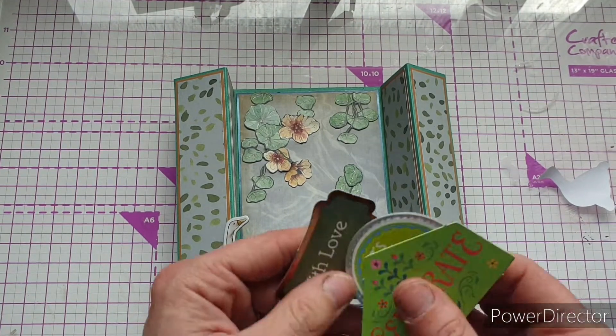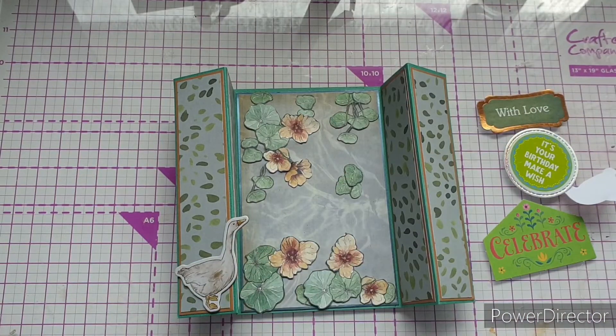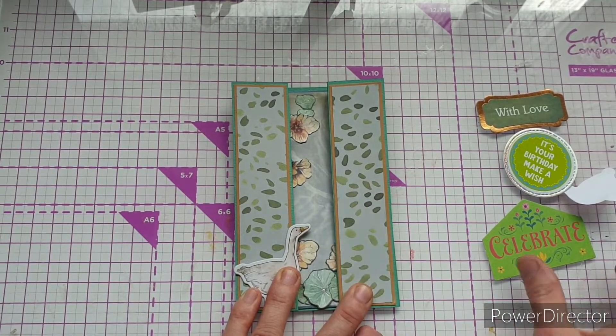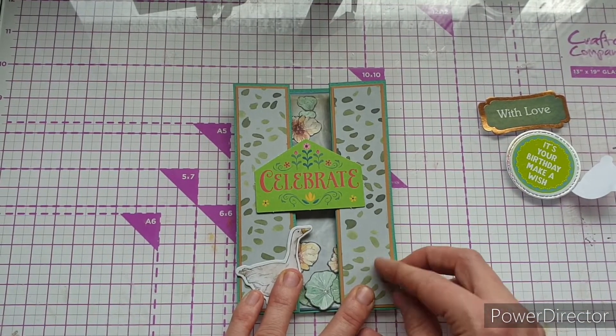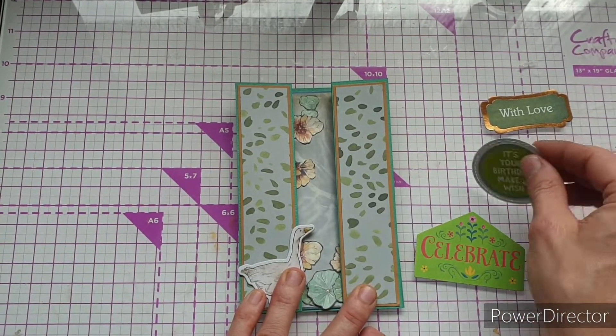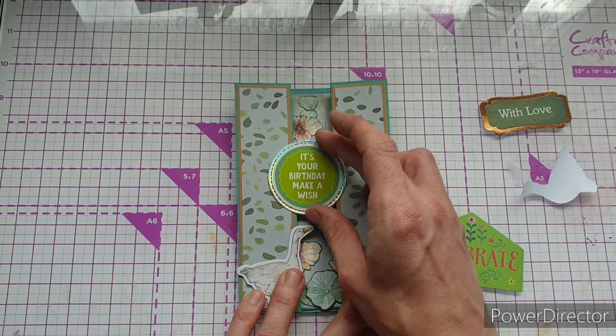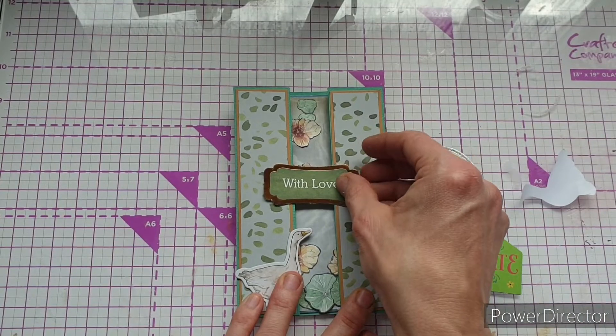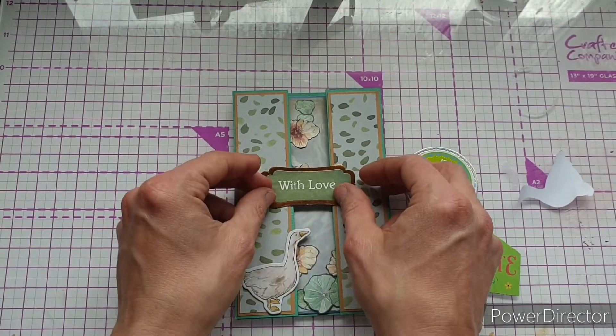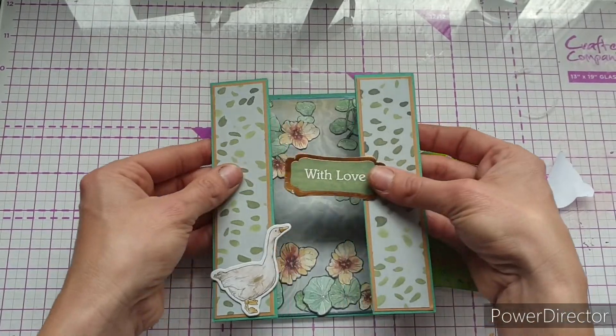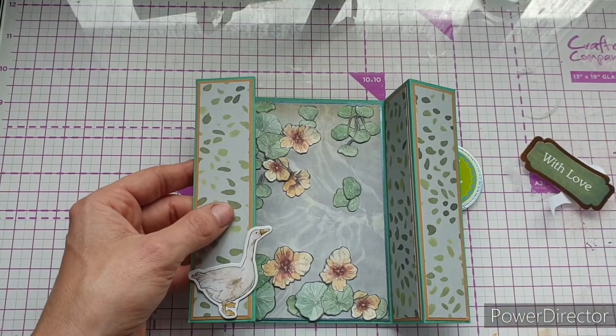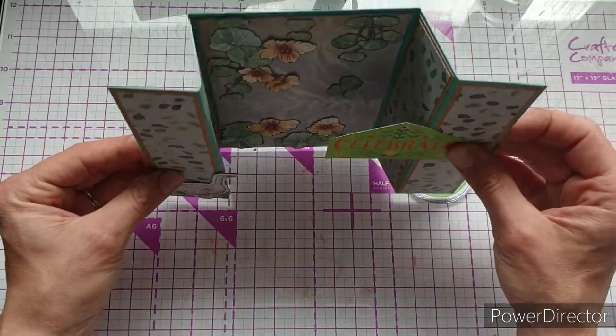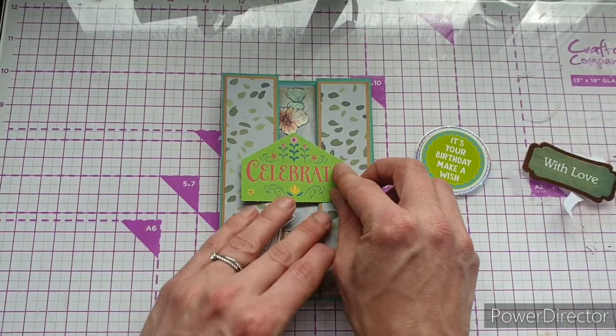All that's left to do is to attach a sentiment. I've got a few different ones from my stash here, and I'm just going to see which one I like the best. Because my goose is on this side, I think I want the sentiment this side. I kind of like them to be in the middle. That's quite good, it feeds into the pond theme, but I just think it looks a little bit young for the pond. I could just go with 'with love.' Either way it's going to open out like that. I actually quite like the 'celebrate.'